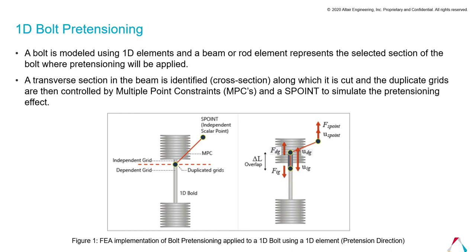The pretension is implemented in OptiStruct with the help of MPCs. A transverse cross-section of the beam is identified — the cross section along which it is cut — and the duplicate grids are controlled by Multiple Point Constraints (MPC) and a scalar point (S-point) to simulate the pretensioning effect.